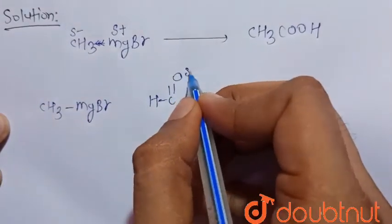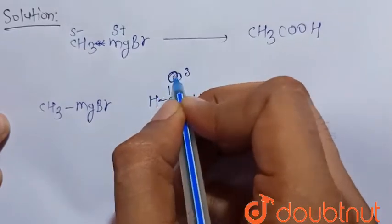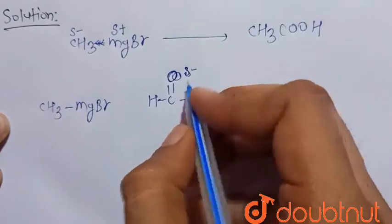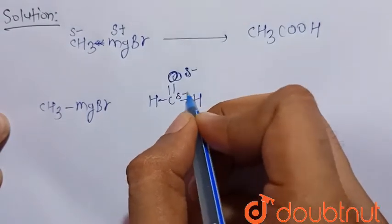We know that oxygen is more electronegative, so it attains delta-negative charge. This is the C=OH group, and carbon attains delta-positive charge.